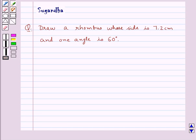Hello and welcome to the session. In this session we discuss the following question which says draw a rhombus whose side is 7.2 cm and one angle is 60 degrees.